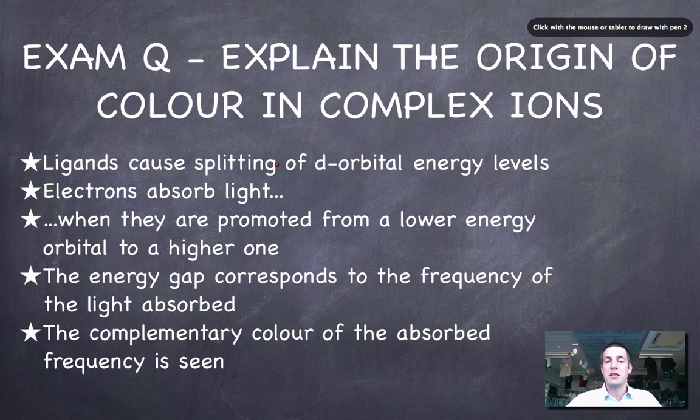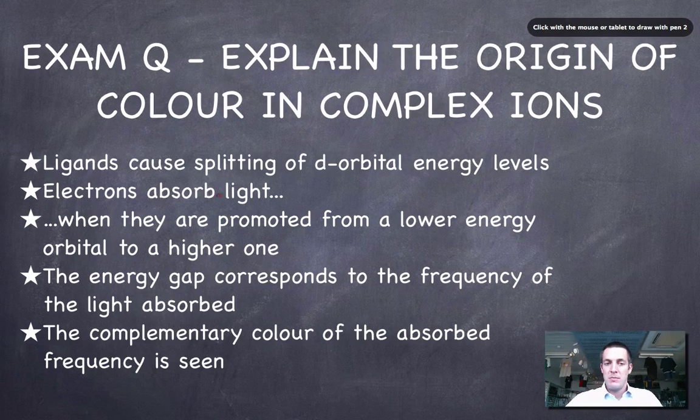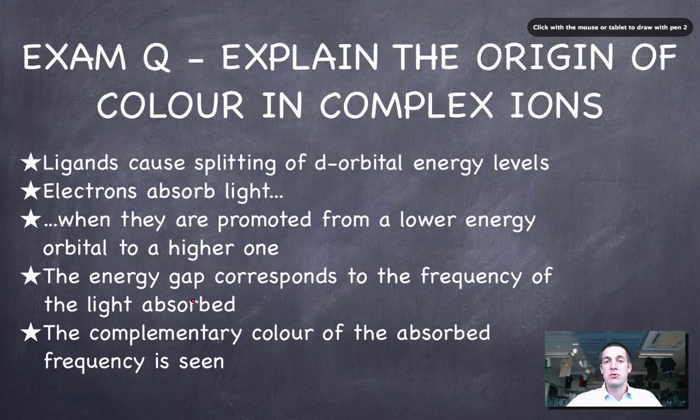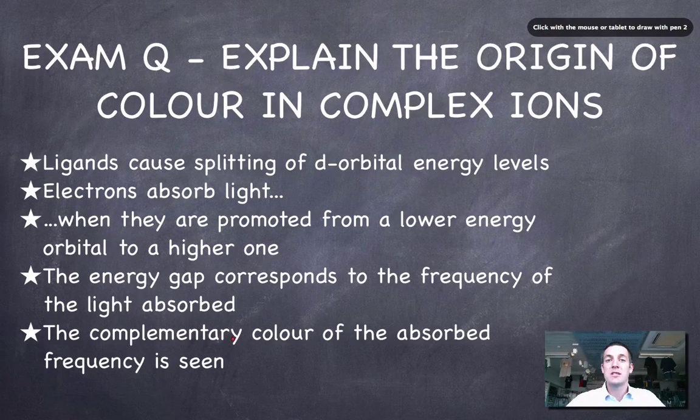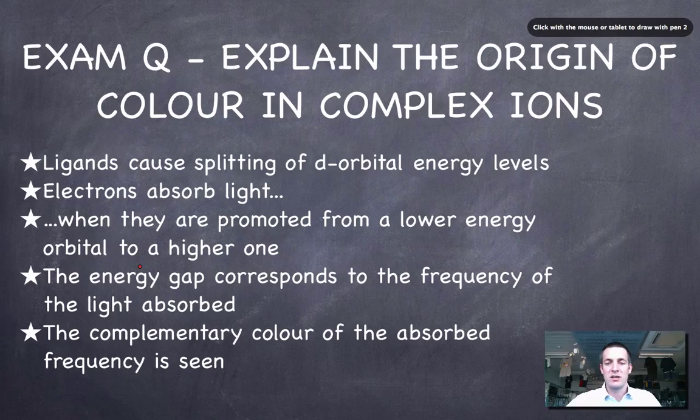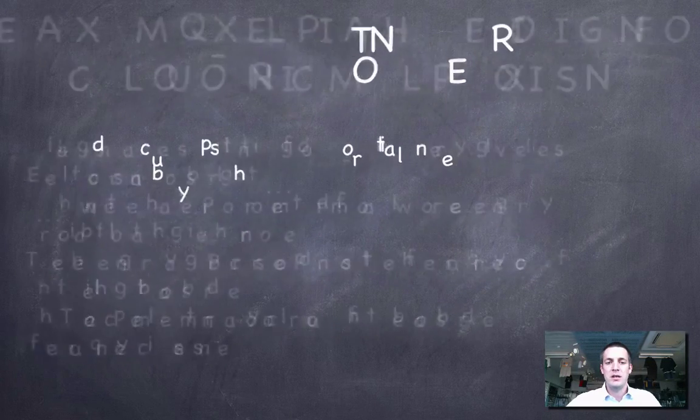How much they're split depends on the ligand. It also depends on the cation in the center. But once these orbitals are split, electrons can absorb light. Because remember, the absorbing light will promote them from a lower energy orbital to a higher one. And the energy gap between the orbitals corresponds to the frequency of the light absorbed. And the frequency of the light absorbed is related to the color that's absorbed. And we end up seeing the complementary color of that color. So it's kind of five points that you have to make if you get this relatively innocent-looking question in an exam.